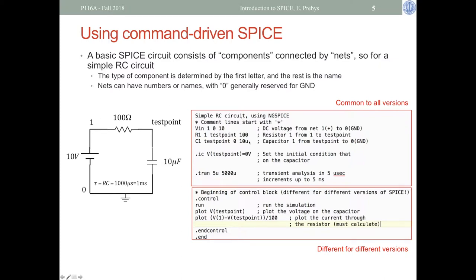This part of the input would be understood by any version of SPICE. The next part is a control block understood by text interface versions — I'm using ngSPICE. I tell it to run the simulation, plot the voltage at the test point, and then plot the current using a mathematical equation on the plot command: take the voltage at node 1 minus the voltage at test point and divide by 100.